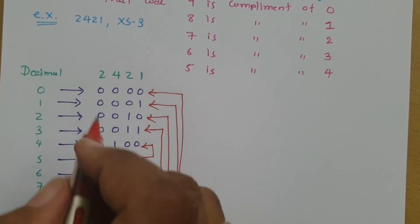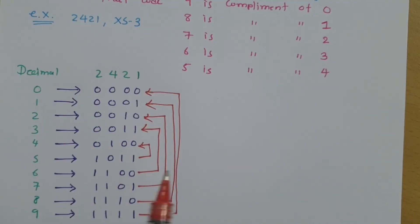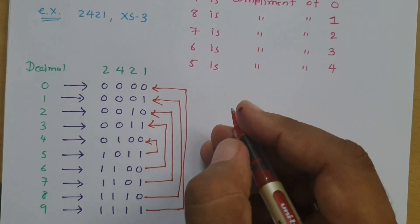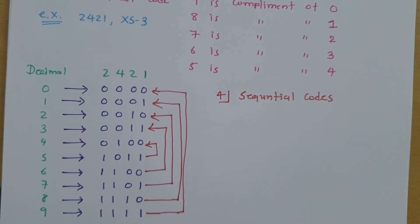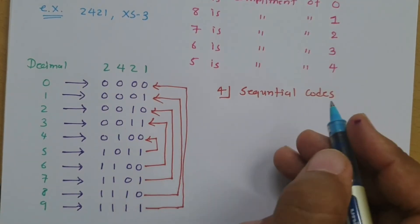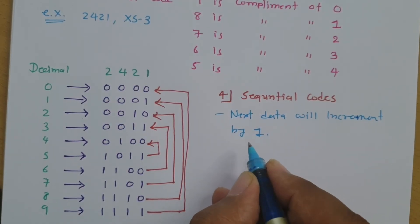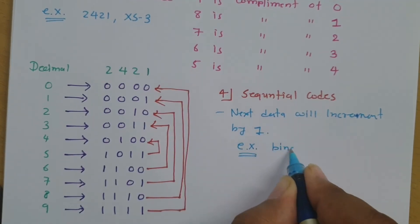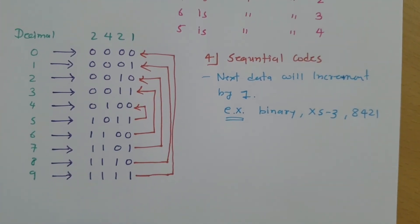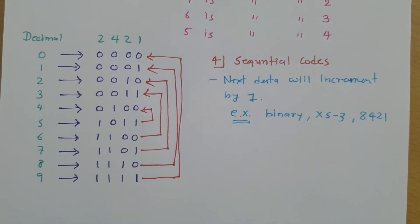I will not explain XS3 right now, but I will make a separate video for it showing how it follows the self-reflective property. The fourth category is sequential code. In a sequential code, the next data increments by 1. Examples include binary, XS3, and 421 codes.